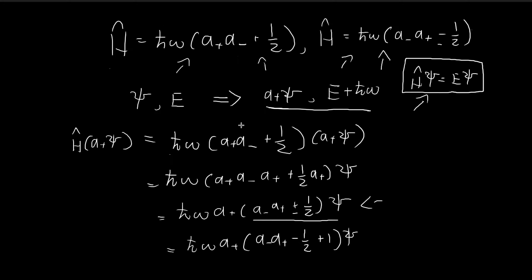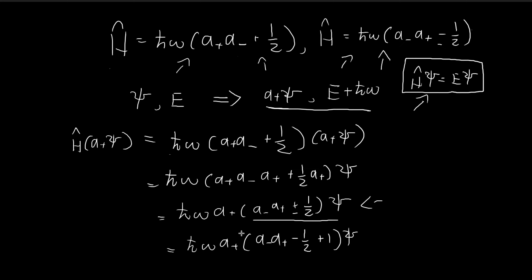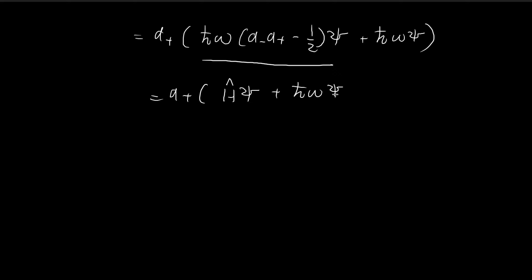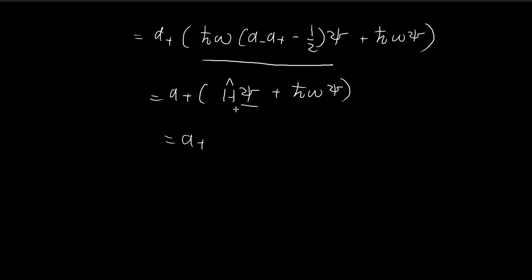Moving on, I'm going to group up some of these terms together. I pull the a-plus operator to the very front and move the constants in, giving me a-minus, a-plus, minus one-half, times ψ. We also have this plus-one term multiplied by the constants, contributing an ℏω ψ term. I've arranged things this way so I can use the Hamiltonian operator definition — recall that this grouped expression is also the Hamiltonian operator applied to ψ.